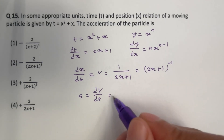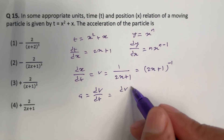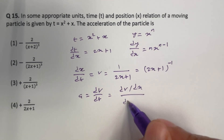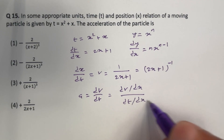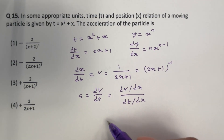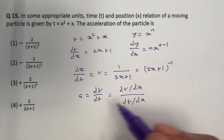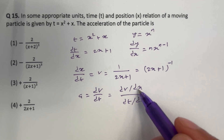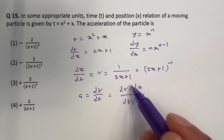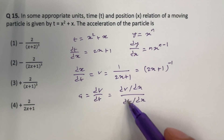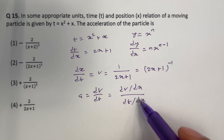Therefore, if we differentiate v with respect to x, and then differentiate t with respect to x, then we can get dv by dt as per the chain rule. So v is the function we are going to differentiate with respect to x, and t is the function we differentiate with respect to x to get dt by dx. We already have dt by dx.